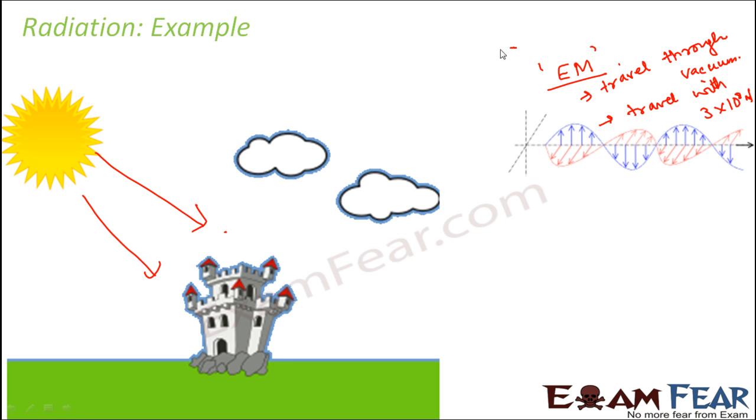You will learn more about electromagnetic radiation in your class 12. But for now, you can just understand that radiation happens in the form of electromagnetic waves. As these waves move from one point to another, the radiation also moves in their form. Because it travels in the form of electromagnetic waves, they are able to travel through vacuum and travel with the speed of light, which is very high.